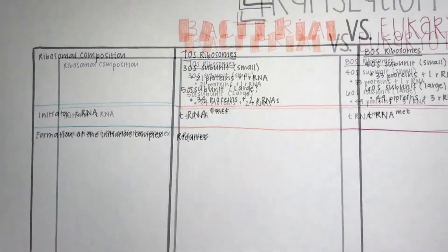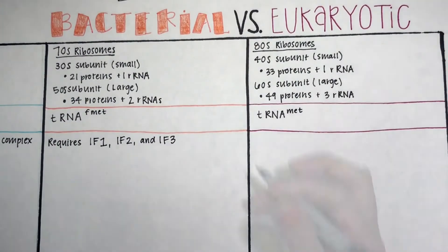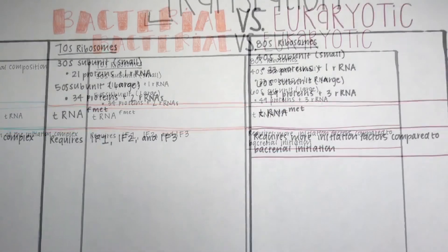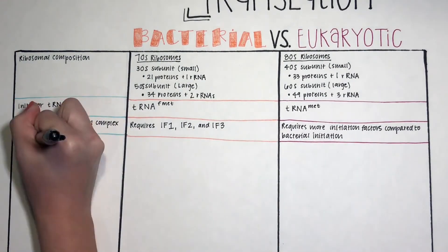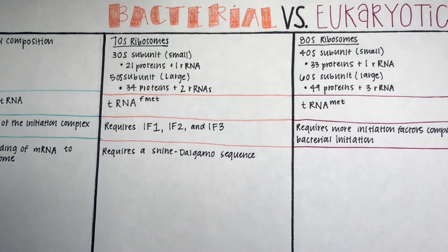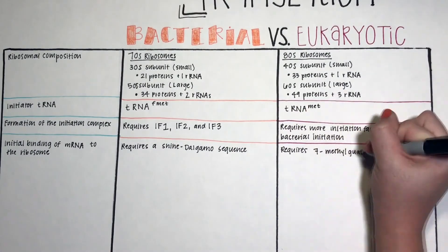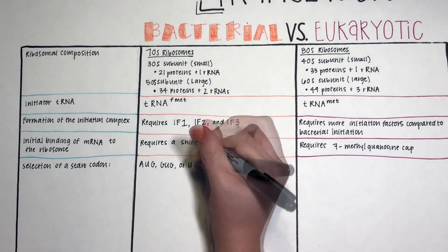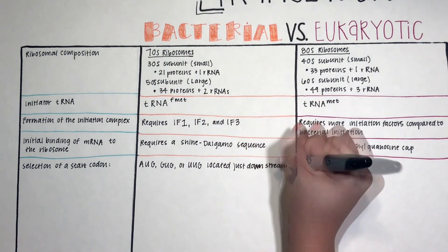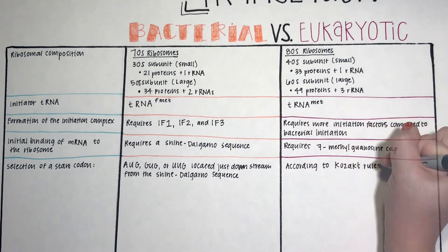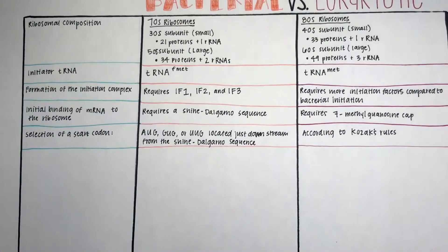Formation of the initiation complex also differs. For bacteria, it requires IF1, IF2, and IF3. For eukaryotes, it requires more initiation factors compared to bacterial initiation. In bacteria, the initial binding of mRNA to the ribosome requires a Shine-Dalgarno sequence. However, for eukaryotes, it requires a 7-methylguanosine cap. The start codons in bacteria include AUG, GUG, or UUG, located just downstream from the Shine-Dalgarno sequence. The start codons for eukaryotes are determined according to Kozak's rules.